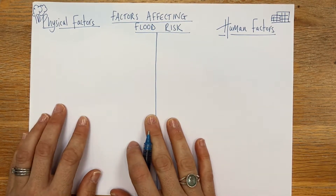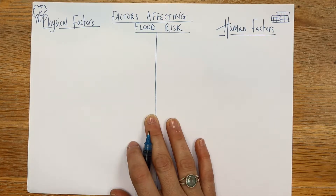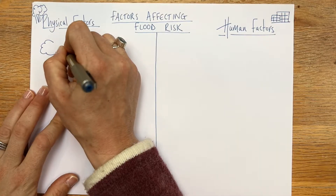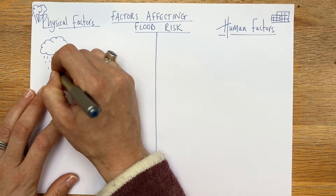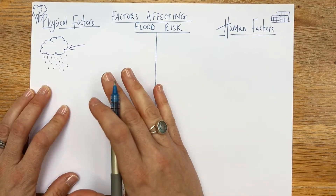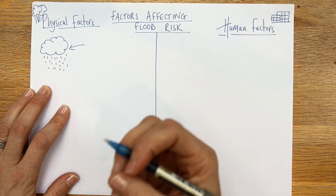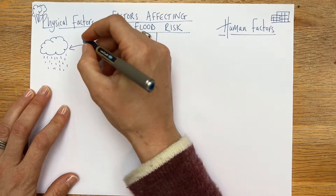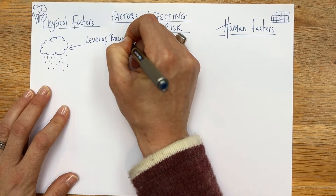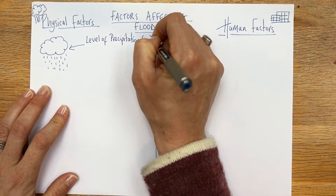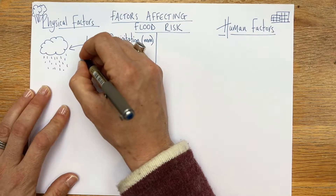Starting with our physical factors: obviously all flooding is caused by rainfall, or precipitation as it should be known. Draw a rain cloud with rain coming out underneath. Physical factors causing flooding include the level of precipitation — that means how much rainfall in millimetres — and also the frequency, meaning how prolonged it's been.